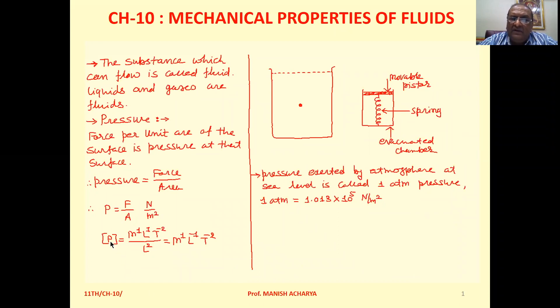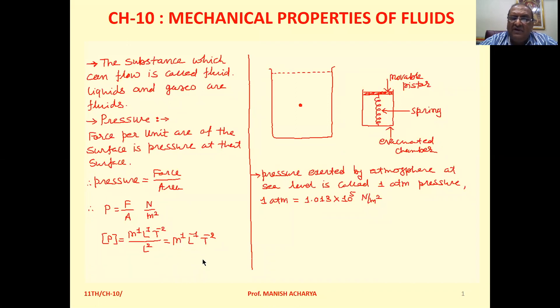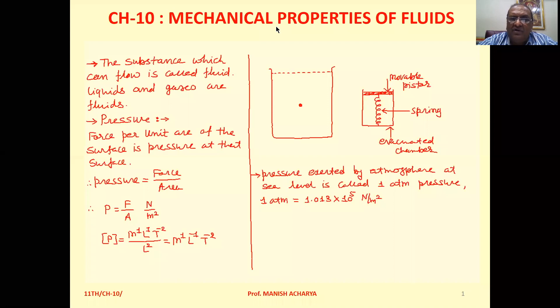We can prepare the dimensional formula of pressure. For force, the dimensional formula is M1 L1 T^-2, and for area that is L2. So resultantly, we can write M1 L^-1 T^-2, which is the dimensional formula of pressure. This is the definition of pressure and its unit and dimensional formula.